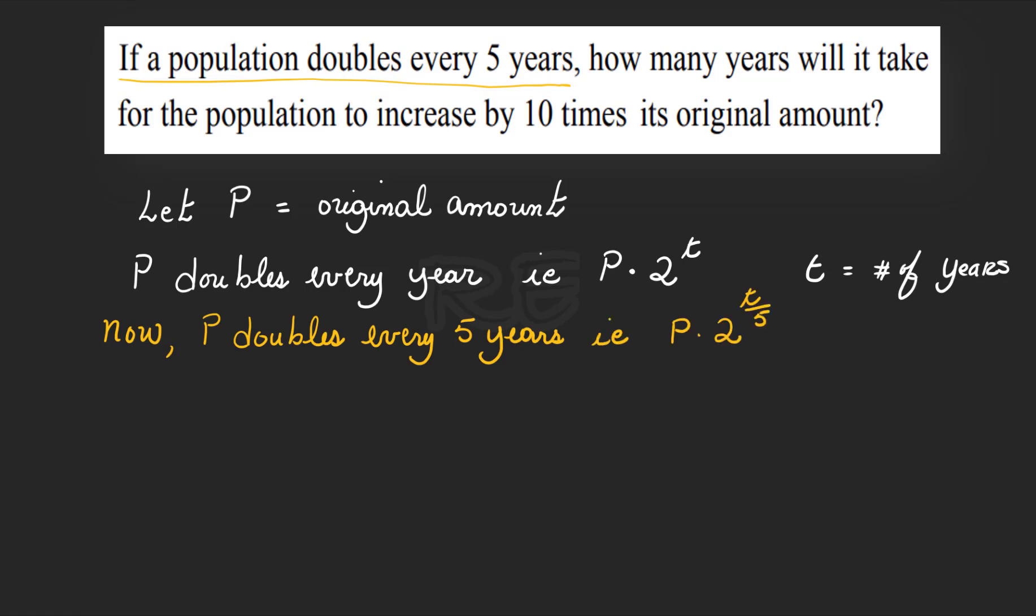Now, P doubles every five years. Therefore, the accumulated amount will be P times 2 to the t divided by five, which is the amount for one year.